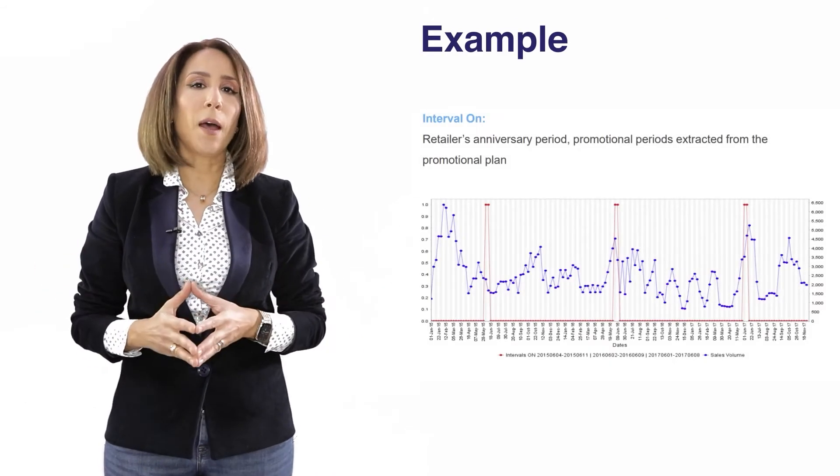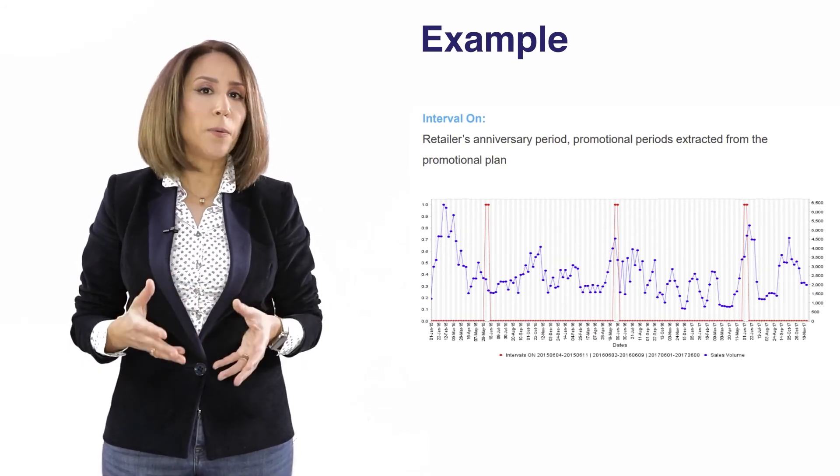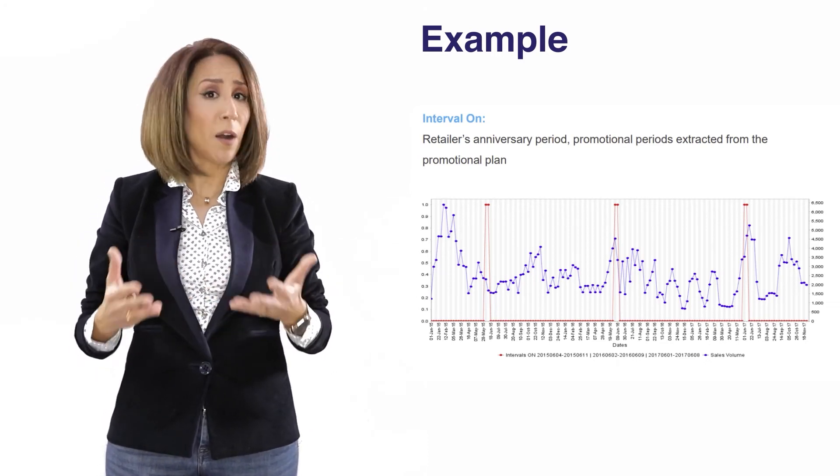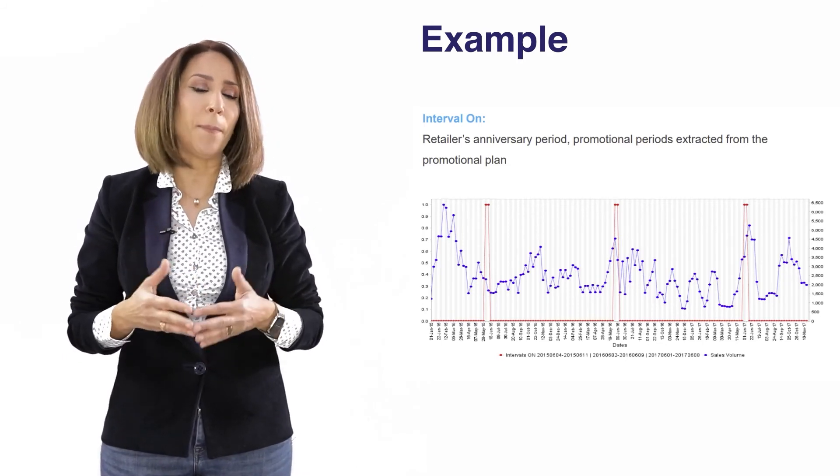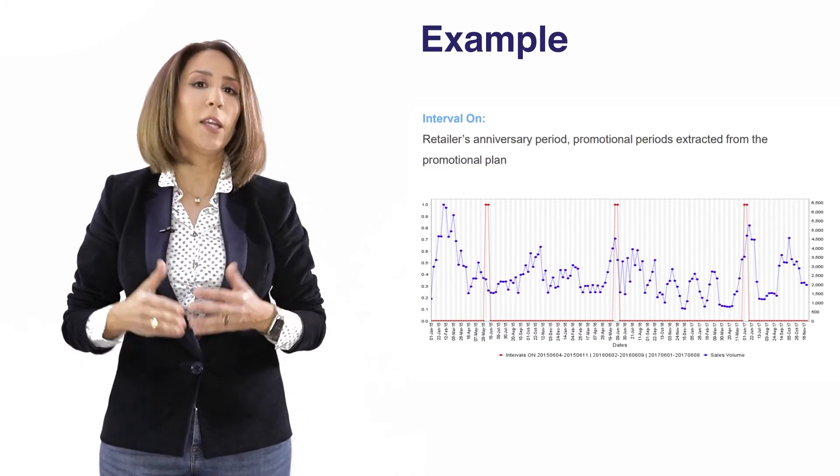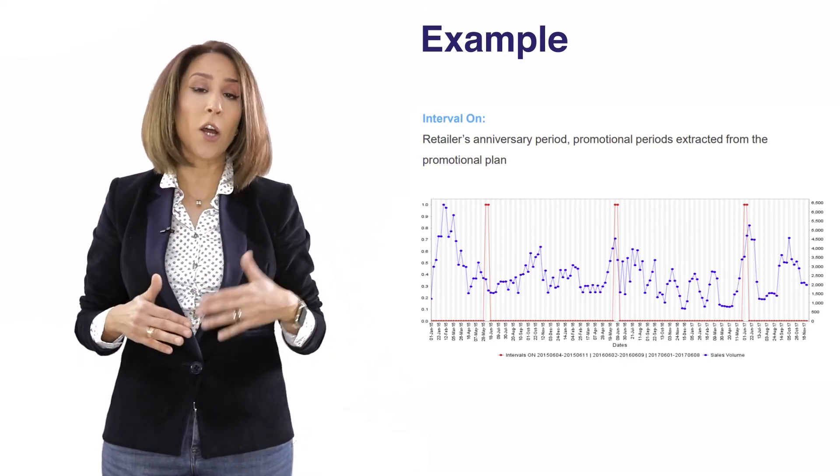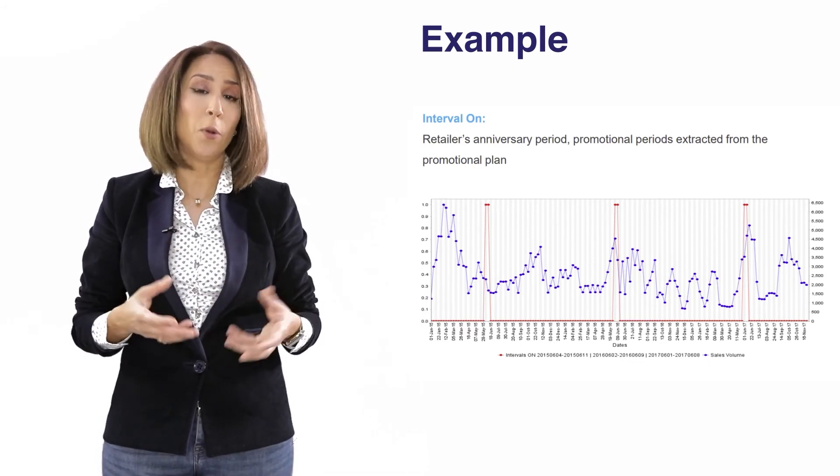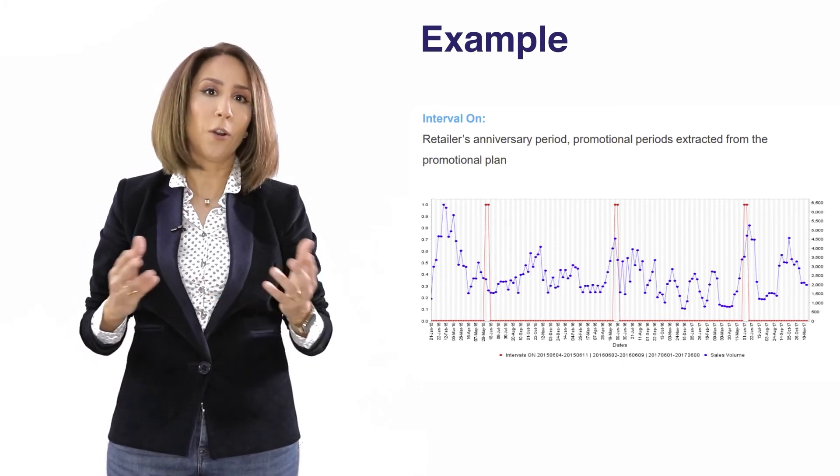Here is an example from the retail industry. So in this context, the retailer celebrates the anniversary of the business each year and during two to three weeks they will be offering all sorts of promotions to their customers. And because this event happens every single year during a certain period, that's why we have used the interval processor in order to create such a variable. Now the coefficient that this variable will take later on in the modeling stage will actually measure the impact of those special promotional offers happening during the retailer's anniversary on the sales uplift or the revenue.